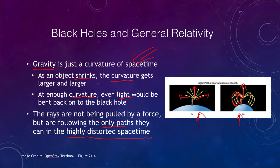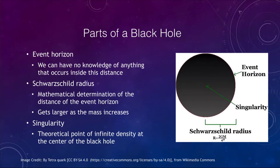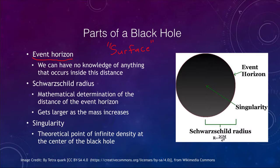So what are the parts of a black hole? Black holes are actually relatively simple objects in that they don't have a lot of parts. One part we talk about is the event horizon. The event horizon is sometimes called the surface of the black hole — not a true surface, there's nothing there. It is just a distance from the center of the black hole, specifically the distance at which the escape velocity equals the speed of light.